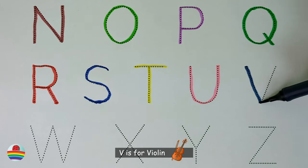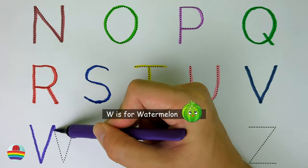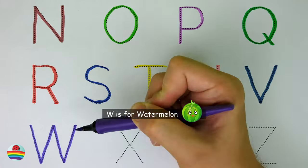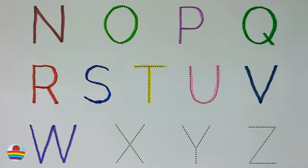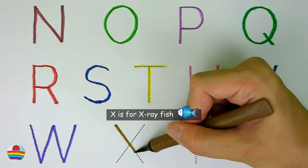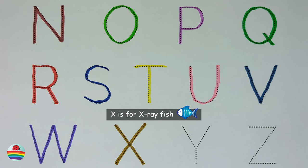V. V is for violin. V. W. W is for watermelon. W. X. X is for x-ray fish. X.